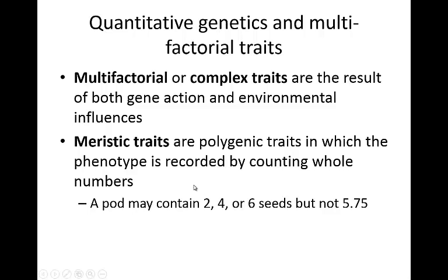In the case of myristic traits, instead of being a gradation of phenotypes, they're going to be recorded by counting whole numbers. So if we're looking at peas, for example, a particular pod may contain two seeds, four seeds, six seeds, but it's not going to contain 5.75 seeds. On average it may average out to 5.75, but an individual pod is only going to have a discrete number of seeds in it.